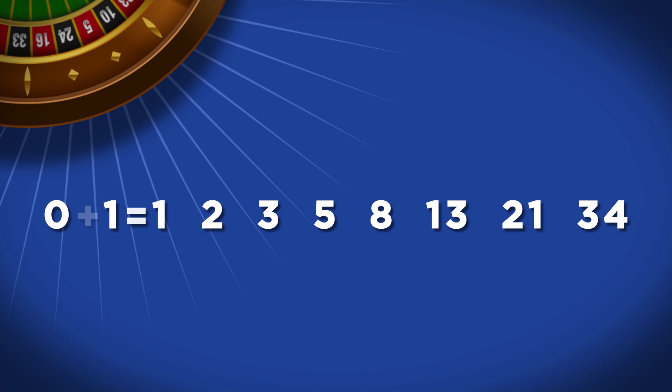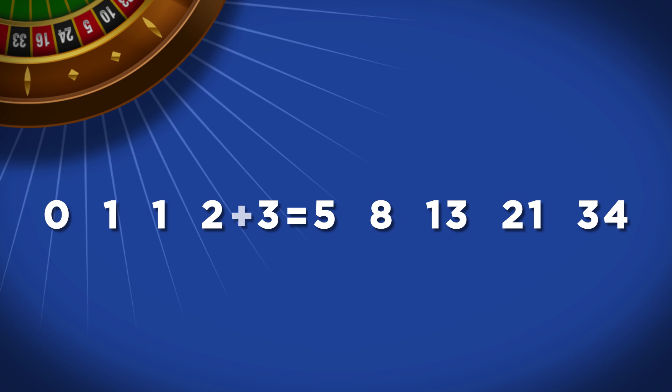It works by following a set naturally occurring mathematical sequence, where cumulative numbers are added together. Each number is added to the next number, which equals the number after that, like this.